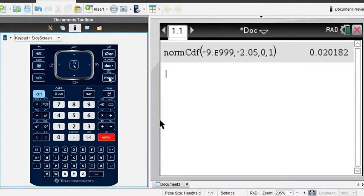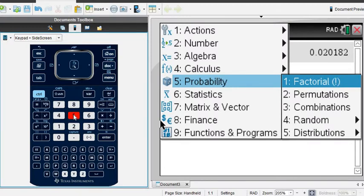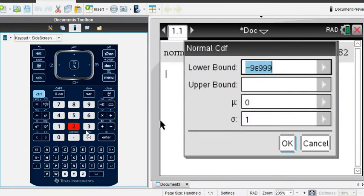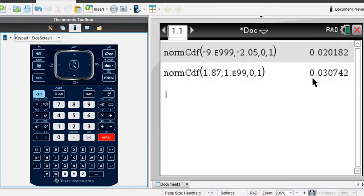If we grab our calculator again, this time I'll show you that you can go under probability. I could go to 5 probability, then number 5 distributions and 2 normal CDF. Since it's a right tail starting at 1.87, we would do 1.87 to positive infinity. I'll use 1e99—that's 1 with 99 zeros behind it. For this one, we get 0.0307.